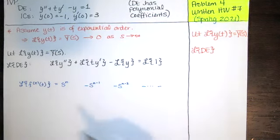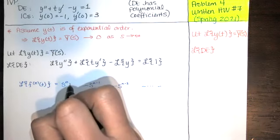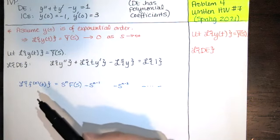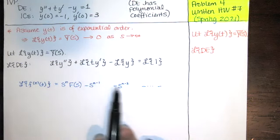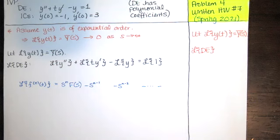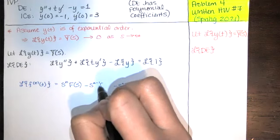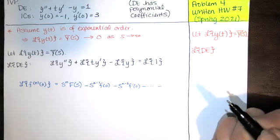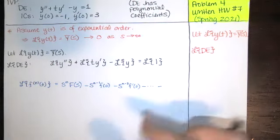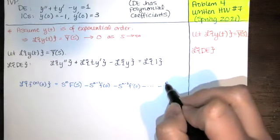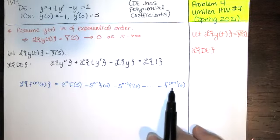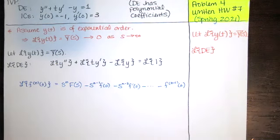Each power of S is multiplied by a function. S to the n is multiplied by F(S), the Laplace transform of f(T). All the other terms are multiplied by the function evaluated at zero: f(0), then f'(0), f''(0), up to the (n−1)th derivative of f at zero. So for a fifth derivative, the last initial condition term would be the fourth derivative at zero.